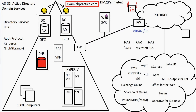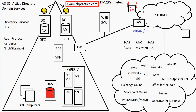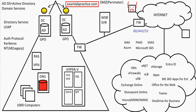Microsoft has ways to link on-premise and cloud together. That service is called Microsoft Entra Connect — formerly known as Azure AD Connect. This was a server you could set up on-premise.